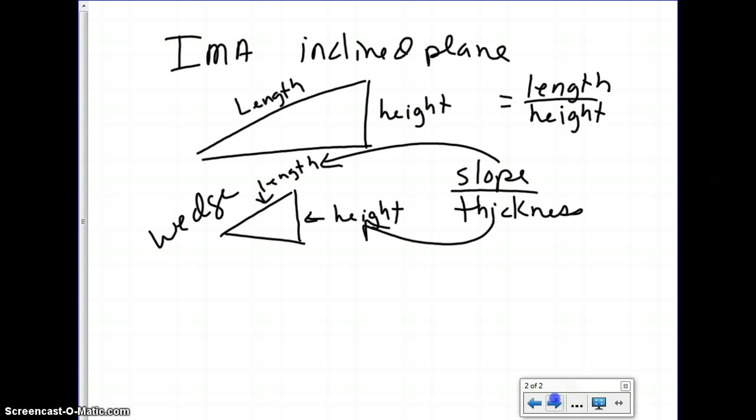If we are looking at the MA of a wheel and axle, a wheel is a large circle that turns a smaller circle. All you need to know about this is you want a really small axle and a really big wheel to get a great mechanical advantage.